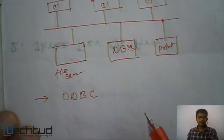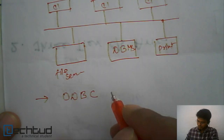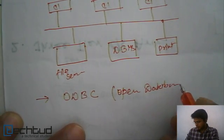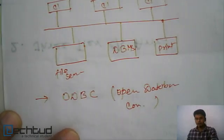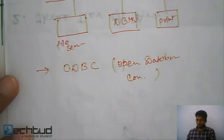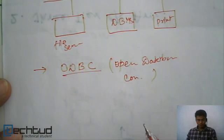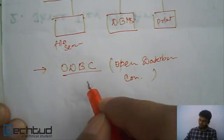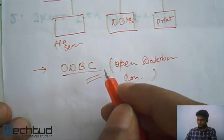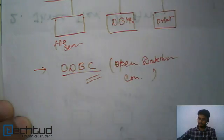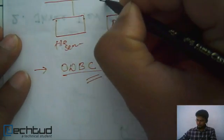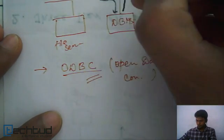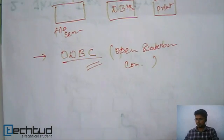Almost all database vendors provide an ODBC connector. Using this ODBC connector, we make a request to the server and the server replies back to us. So this is all about two-tier architecture.